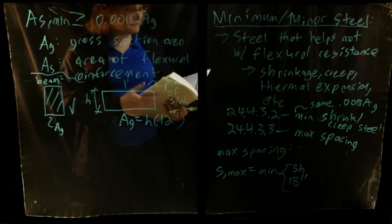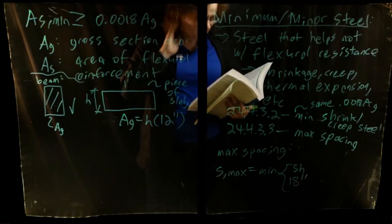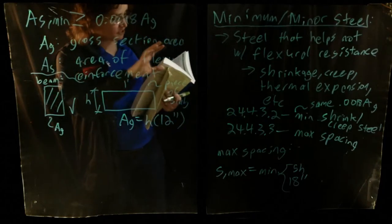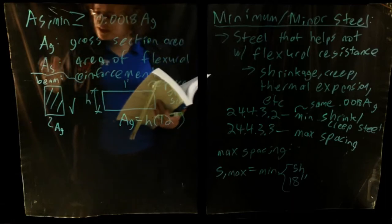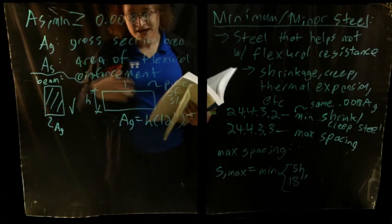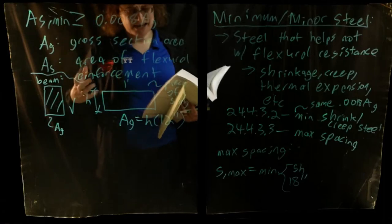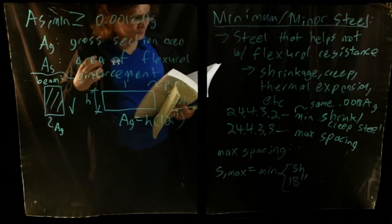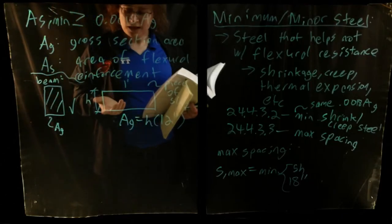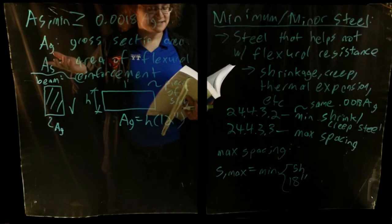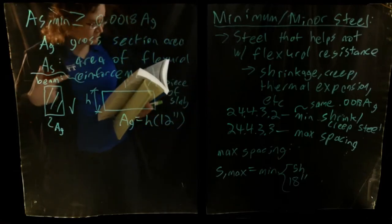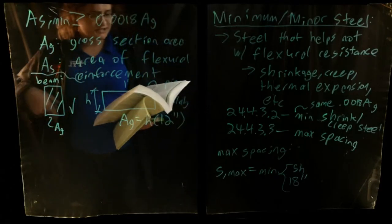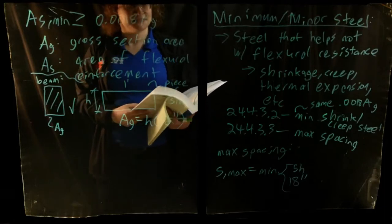These are just checks we need to work through. You can treat these code checks as a starting point — if you're designing a slab from scratch, starting with the minimum slab thickness isn't a bad idea, since you know you can never go below it. Then you simply iterate to a larger slab size if mechanics require it.